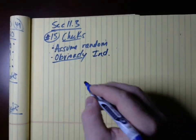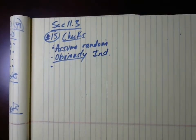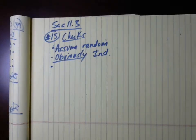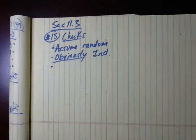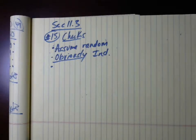The populations from which the samples are drawn must be normally distributed, or the samples must be large - meaning n₁ ≥ 30 or n₂ ≥ 30. There are only eight carpeted and eight uncarpeted rooms, so n₁ = 8 and n₂ = 8 - not large enough. But the problem states that a normal probability plot and box plot indicate that the data are approximately normally distributed with no outliers.